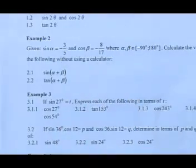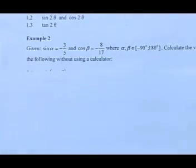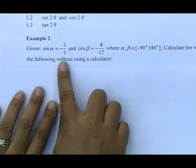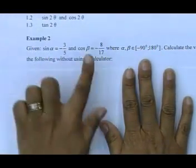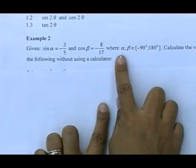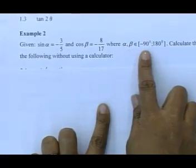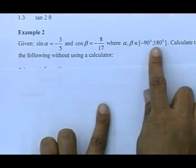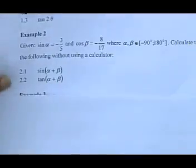We're going to example number two. It says sin theta is negative three over five and cos is negative eight over 17, with alpha and beta between negative 90 and 180 degrees. We have to go and calculate the values of all of that.